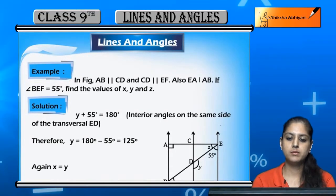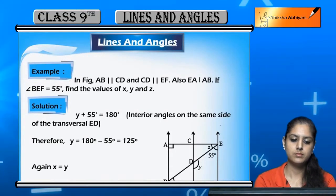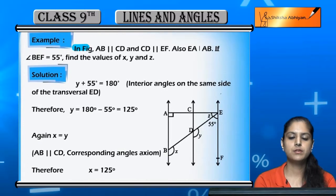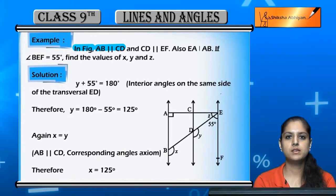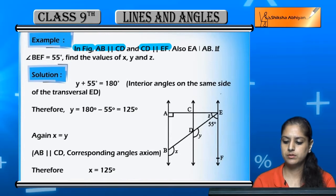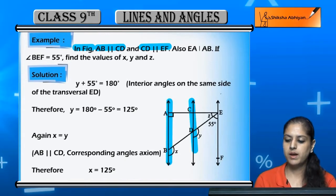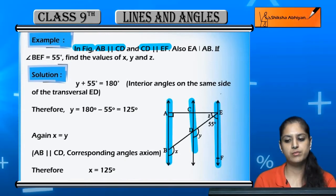Let's look at another example. In the figure, AB is parallel to CD and CD is parallel to EF.